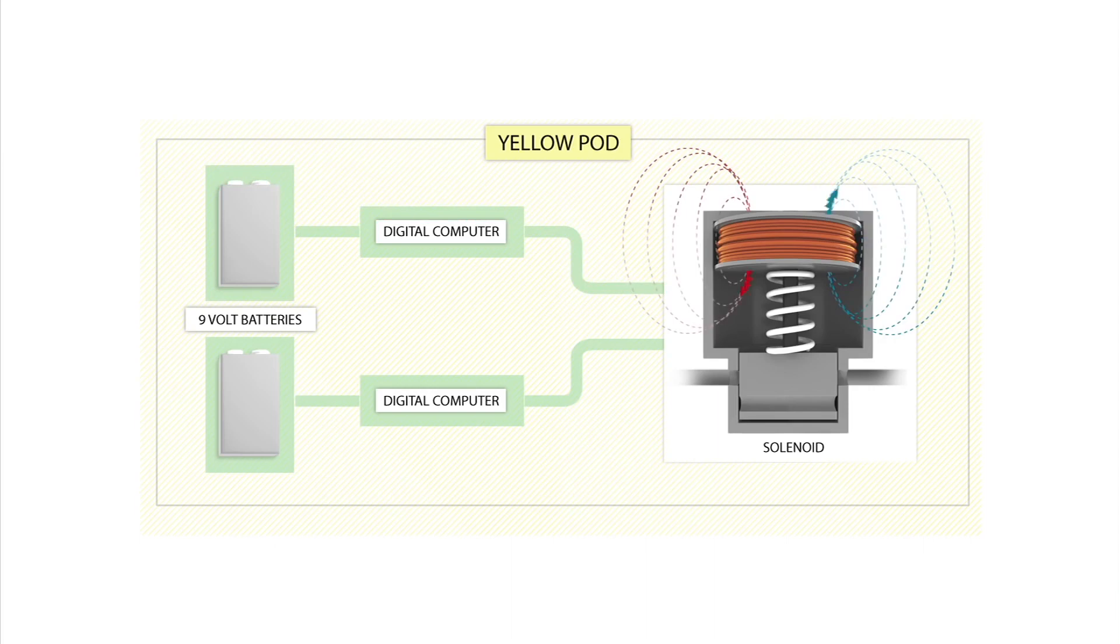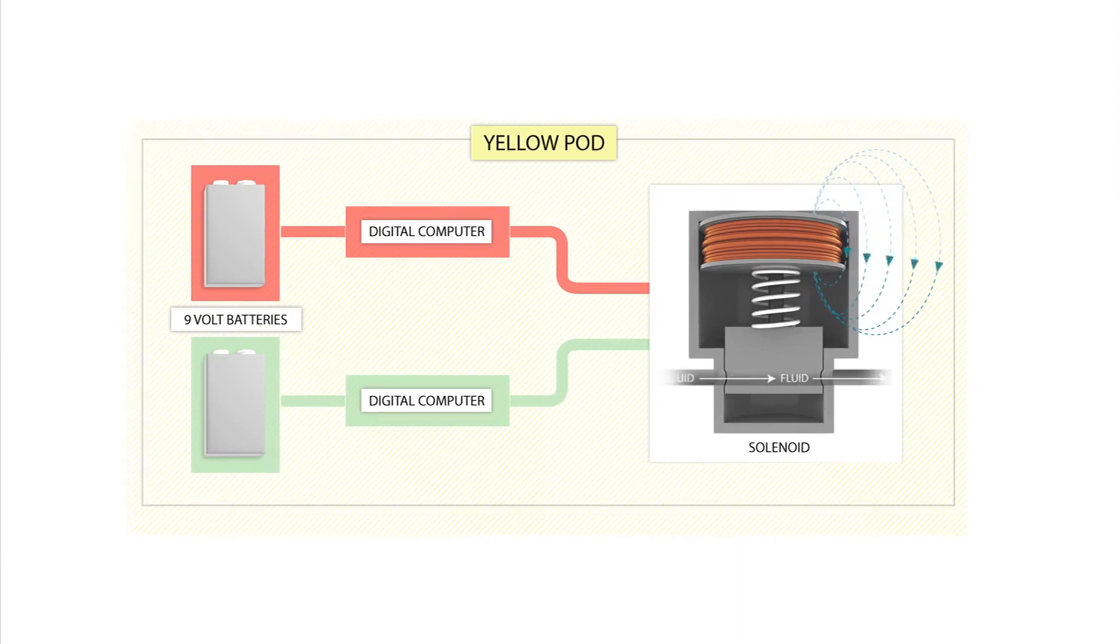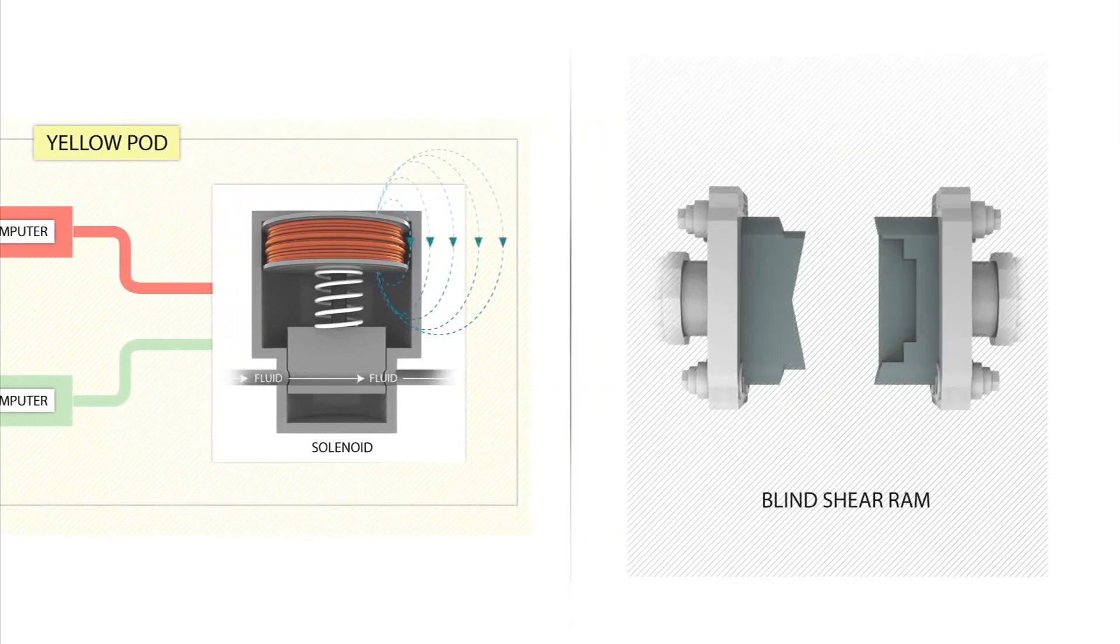Had both coils of the miswired solenoid valve been energized, the two coils would have generated opposing forces on the valve. The solenoid valve would have remained closed, and the blind shear ram would never have been closed. However, the failed battery rendered one coil inoperable, and most likely allowed the other coil to open the solenoid valve by itself. This, in turn, initiated closure of the blind shear ram.